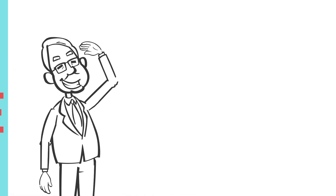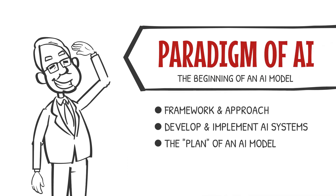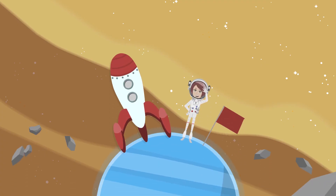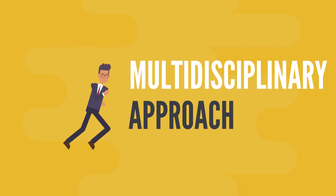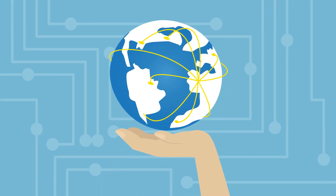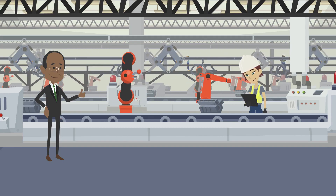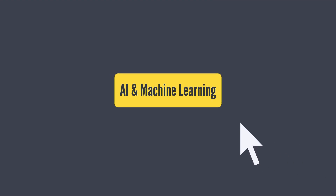In conclusion, the paradigm of AI is a comprehensive framework and approach used to develop and implement artificial intelligence systems, including machine learning. The AI paradigm continues to evolve and expand, with new techniques and algorithms being developed and integrated. It requires a multidisciplinary approach combining elements of computer science, mathematics, statistics, and other disciplines. The potential of AI and machine learning to revolutionize industries and change the way we live is undeniable, making it a field of great importance and interest.